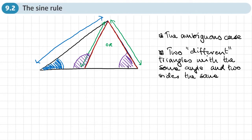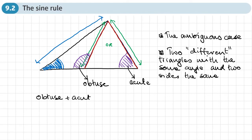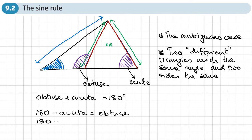One of these angles is going to be acute and the other obtuse. They both add up to 180 degrees — this is because of the isosceles triangle formed. So if our calculator gives us the acute angle, we do 180 minus that to get the obtuse angle, and vice versa. We just need to be aware that our calculator may give the acute angle when we actually want the obtuse one.